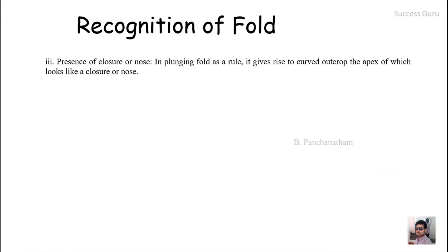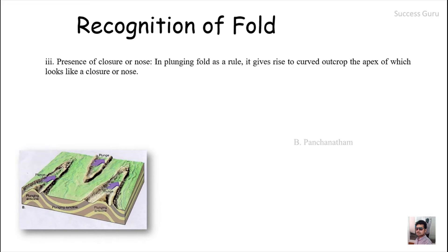The next indicator is the presence of closure or nose. In a plunging fold, as a rule, it gives rise to a curved outcrop, the apex of which looks like a closure or a nose. So if there is a plunging fold, there will be a closure or nose-like appearance.